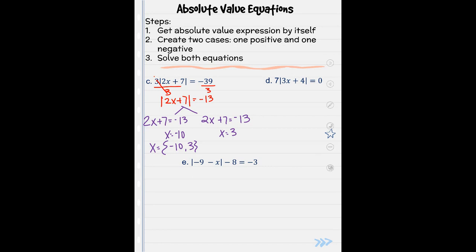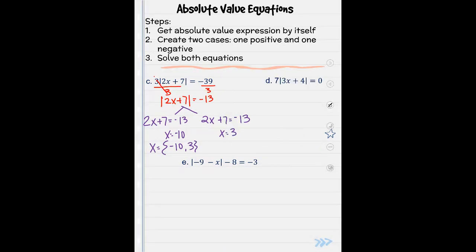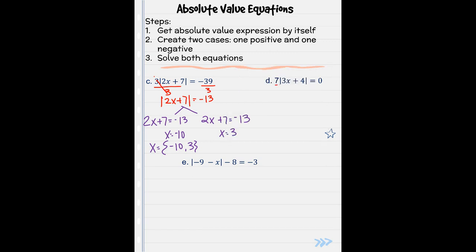All right. So like I said, let me put these answers up here so that you have them. Actually, let's go ahead and do D. So we need to get it by itself. It's being multiplied. So again, same thing. We're going to divide. So then we have 3x plus 4 equals, remember the 0 is on top, so it's okay. It equals 0.